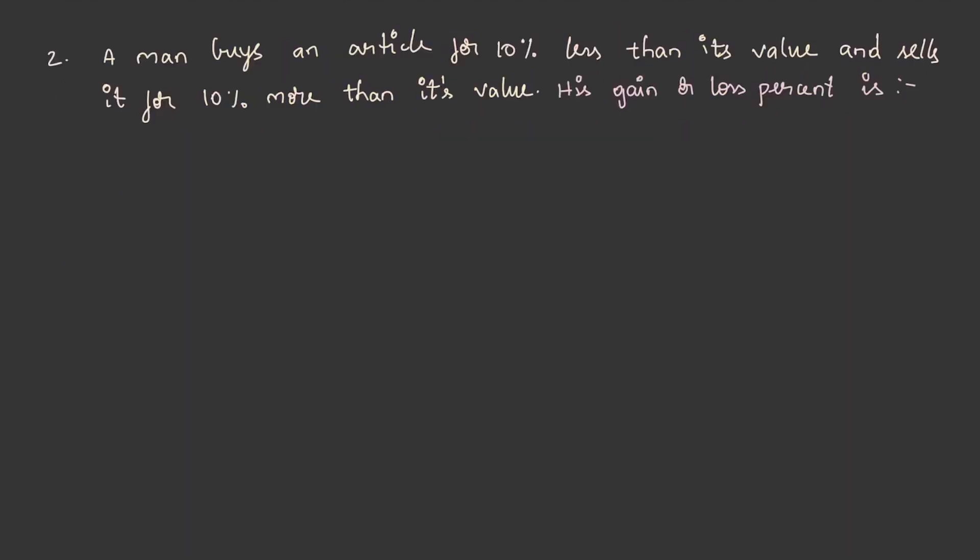Let us solve another question. A man buys an article for 10 percent less than its value and sells it for 10 percent more than its value. We shall solve this. We do not know the value of article.